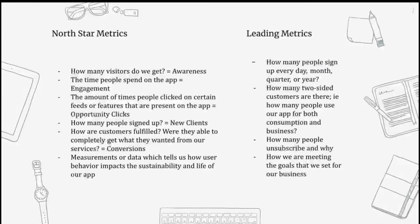Hey guys, my name is Shritz. Let's talk about metrics and money. Metrics are measurements that we use to see how well our app is doing. There are North Star metrics and leading metrics. North Star metrics are awareness, engagement, new clients, and conversions — which are how many users we get, how many people signed up, how long people spend on the app, and if customers are really fulfilled. Our leading metrics are how we are meeting the goals that we set for our business.